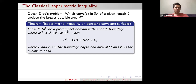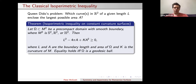Working on the setting of a constant curvature surface, if we have a domain with smooth enough boundary, with boundary length L and enclosed area A, we can quantify the solution to this problem via the isoperimetric inequality. In the Euclidean plane, we always have that L squared minus four pi times A is greater than or equal to zero.